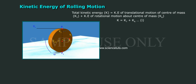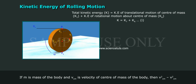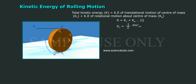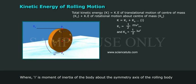If m is mass of the body and V_CM is velocity of center of mass of the body, then K_T = ½mV_CM² and K_R = ½Iω², where I is moment of inertia of the body about the symmetry axis of the rolling body.